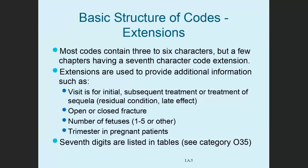Most codes include six characters, but a few chapters have a seventh character code extension. The extensions provide information such as: is this the initial visit, the subsequent visit, or treatment for a sequela? In the musculoskeletal system, is this an open or closed fracture? In the pregnancy section, the number of fetuses — the extensions are one, two, three, four, five, and more than five. And then there's trimester: first trimester, second trimester, third trimester, and in childbirth. The seventh character digits are listed in tables.